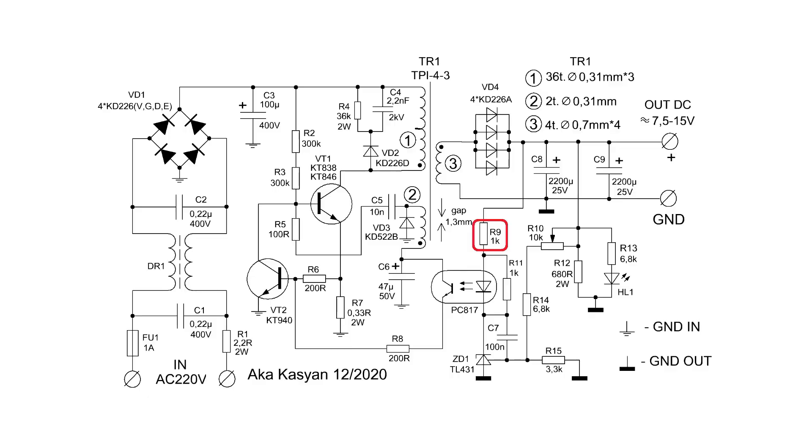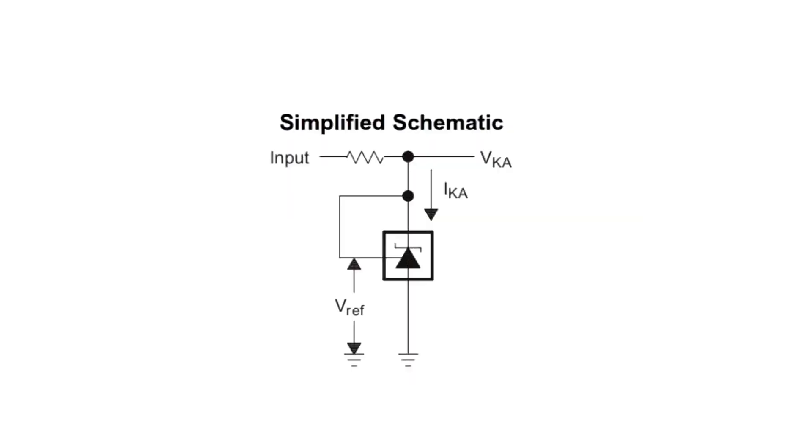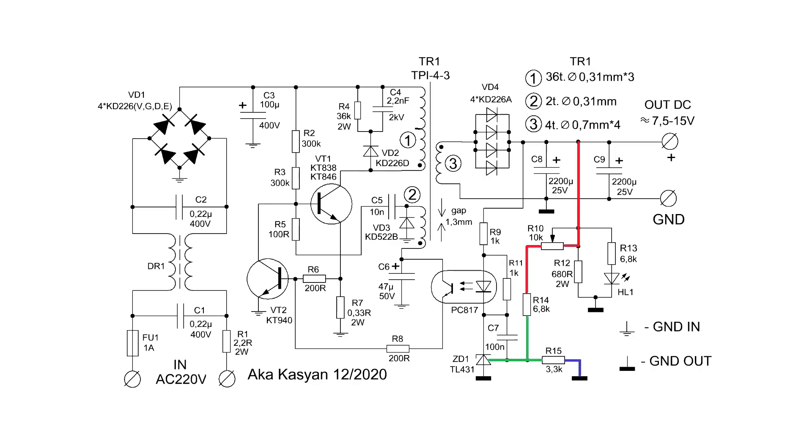The specified resistor sets the stabilization current of the reference source. Voltage stabilization works in a simple way. The TL431 chip is a high-precision, highly stable reference source at 2.5 volts. Simply put, it's a Zener diode that activates at 2.5 volts. It monitors the output voltage using a resistive divider. When the output voltage of the power supply changes, the voltage at the output of the divider also changes, which is the control output of the reference source.